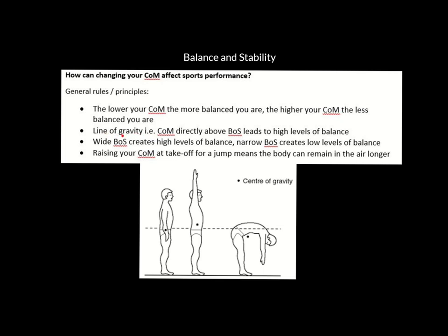Something else we've got is the line of gravity. The centre of mass being directly above the base of support leads to high levels of balance. Here you can see the centre of mass, the base of support, and a direct line connecting them — that is the line of gravity. This person has high balance, but this person may have less because their centre of mass isn't directly above their feet — it goes through the toes. By leaning forwards, your centre of mass is slightly in front of your base of support and you lack balance.